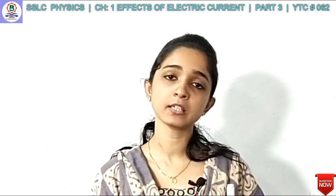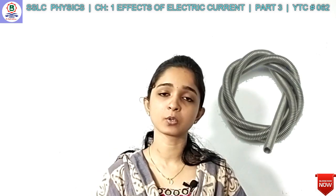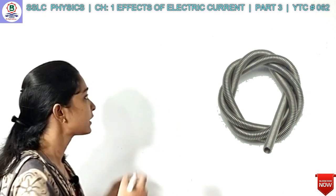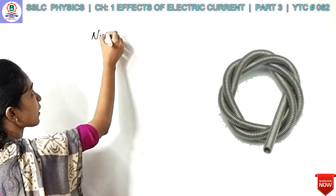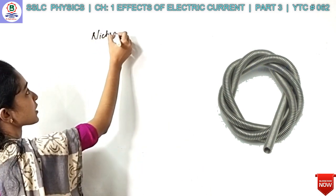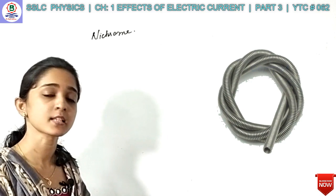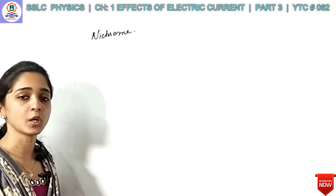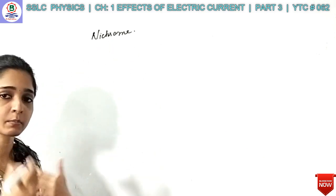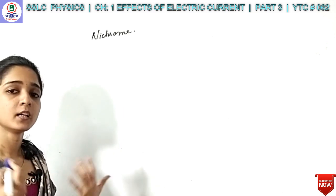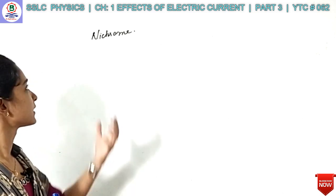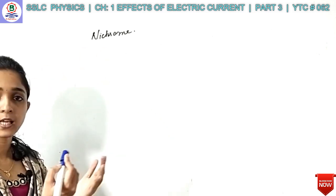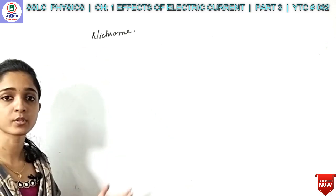What are the two devices? Heating coils. What are the heating coils? How do you say this? This is Nichrome — chromium, iron, and manganese. What are these different kinds of materials?